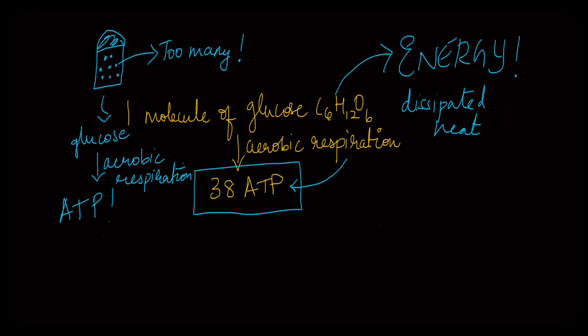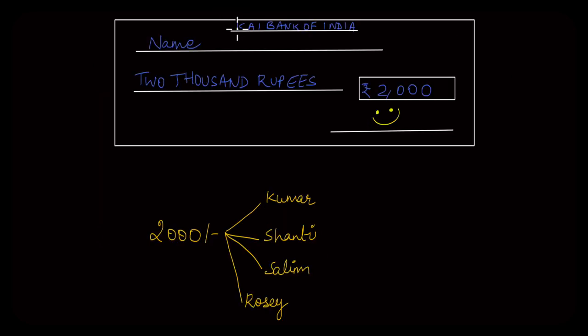To understand this better, let's take another analogy. Say you receive a check for 2000 rupees and you have to split this 2000 rupees between your four friends. You cannot just rip this piece of paper into parts and give it to your friends, right? They would not accept it. They would be quite angry if you did that. That would mean nothing to them.